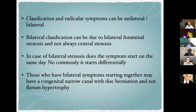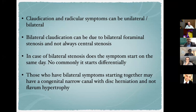Claudication and radicular symptoms can be unilateral or bilateral. Bilateral claudication can be due to bilateral foraminal or lateral recess stenosis, not always central stenosis. In bilateral stenosis, symptoms do not typically start on both sides the same day — patients commonly report they start differentially. Those with bilateral symptoms starting together may have another pathology, like a congenital narrow canal with disc herniation, rather than ligamentum flavum hypertrophy.